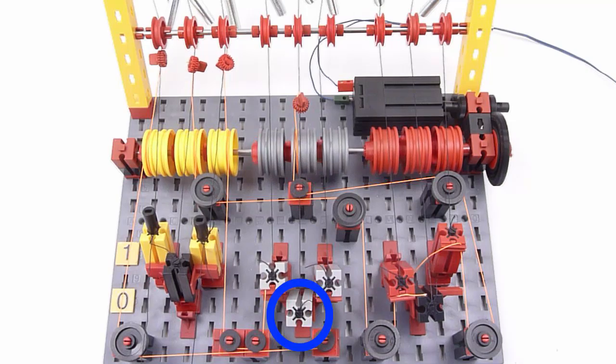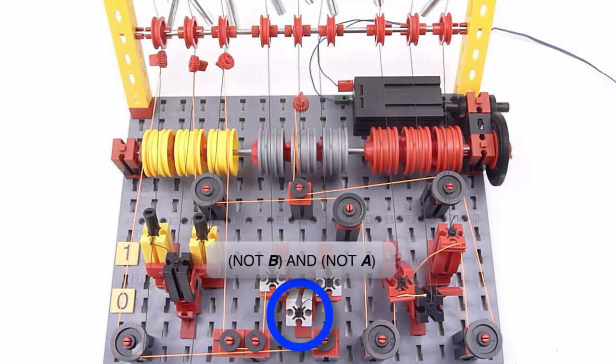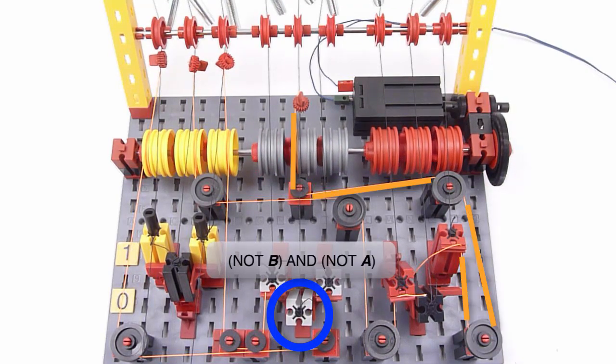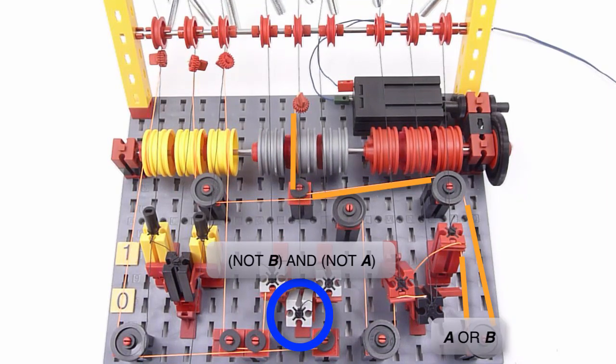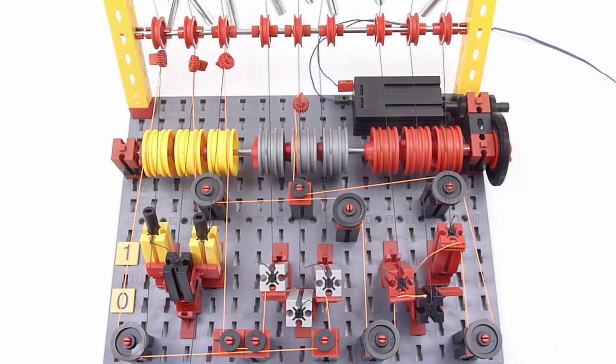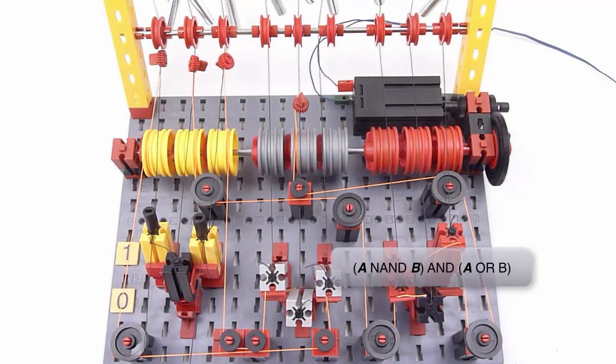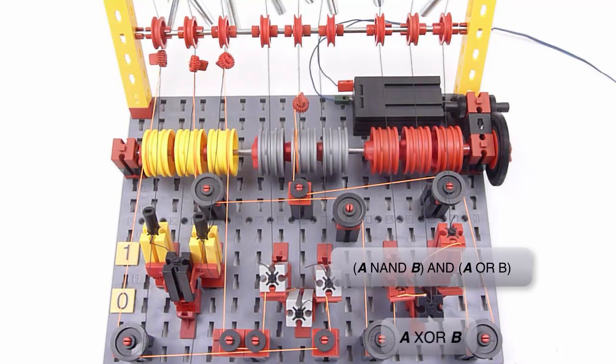This output is not B and not A and the inverted signal is simply A or B. This is fed into the right input of the right gate. The output S on the right, hence is A NAND B and A or B, which is A XOR B.